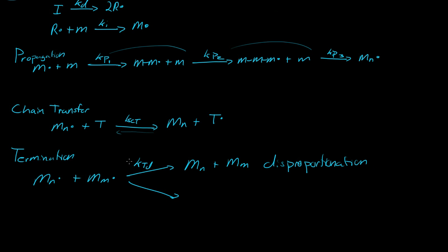That's one way you can have termination. Another way is they can combine, where now you have polymer N plus M, and what we call this is combination.